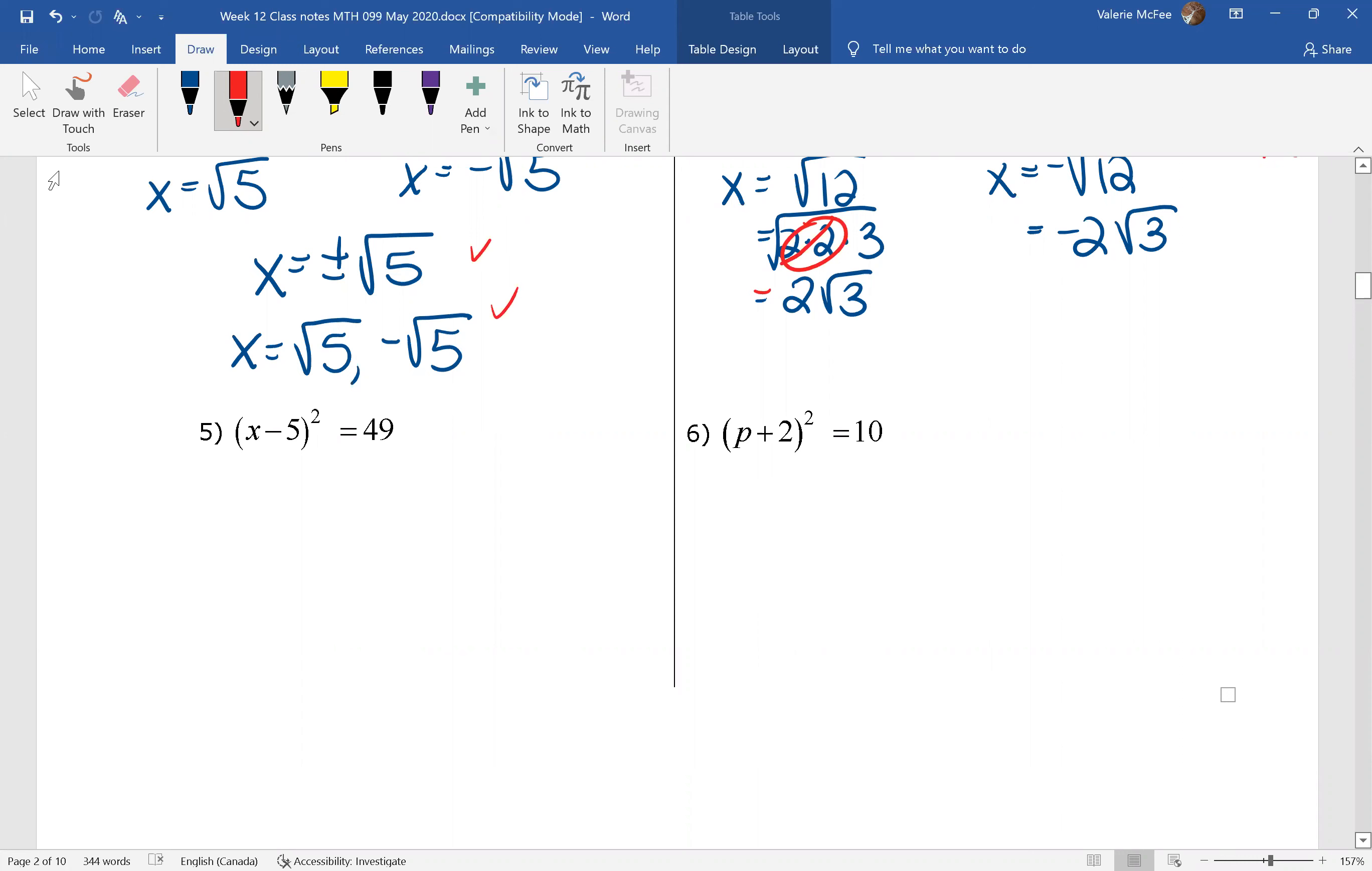What we see here is we have x minus 5 all squared equals 49. This is perfect. The square is already isolated. I have two equations. x minus 5 equals the square root of 49 and x minus 5 equals the negative square root of 49. Do you see here why I need two equations and why it was a good habit to keep practicing it this way?